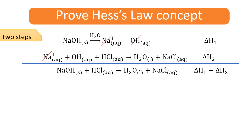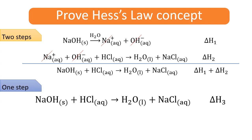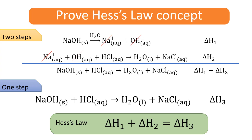This overall reaction can also occur in just one step, and that one-step reaction looks exactly the same as the summation of the two-step reactions. So for Hess's law, delta H1 plus delta H2 must equal delta H3, because these two equations are identical.